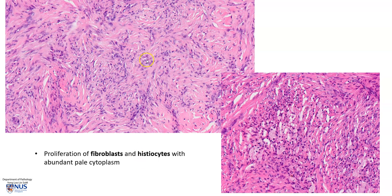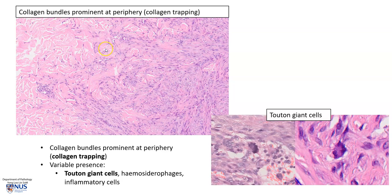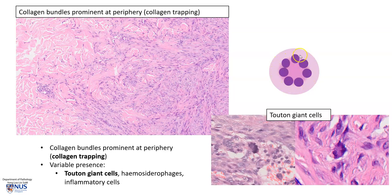Here, at higher magnification, is the proliferation of fibroblasts with these plump, elongated nuclei, and this area shows more histiocytes. Here again, just to recap, the thick collagen bundles at the periphery — collagen trapping. And here are two examples of Touton giant cells; these are not the best examples, but you can see the nuclei arranged in a ring, and usually the outer cytoplasm is bubbly and vacuolated.